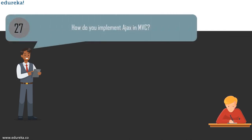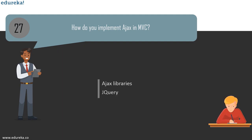The next question is: how can you implement Ajax in MVC? It can be implemented in two ways: by using Ajax libraries and by using jQuery. If you wish to know what jQuery is, you can check out the jQuery tutorial in our YouTube playlist.